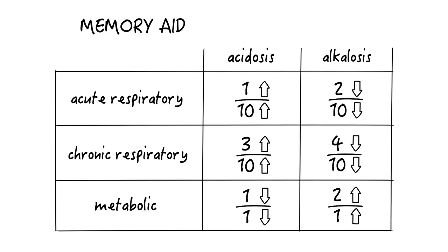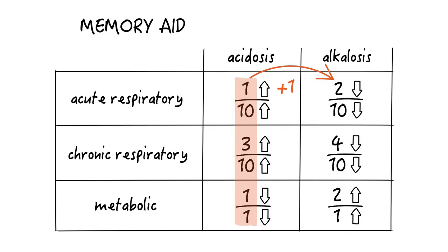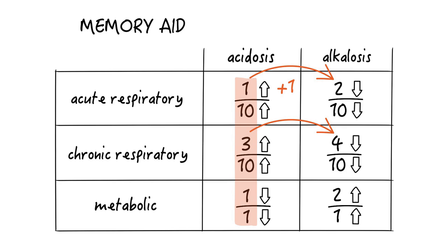Do you recognize a pattern? You really only have to remember the numbers in the left column and add one to the numerator to arrive at the numbers in the right column. So it's 1/10 for acute respiratory acidosis and 2/10 for acute respiratory alkalosis. It's 3/10 for chronic respiratory acidosis and 4/10 for chronic respiratory alkalosis. It's 1/1 for metabolic acidosis and 2/1 for metabolic alkalosis.